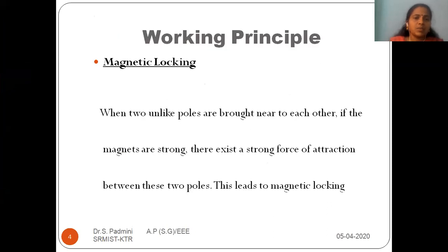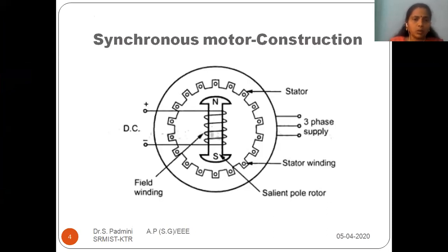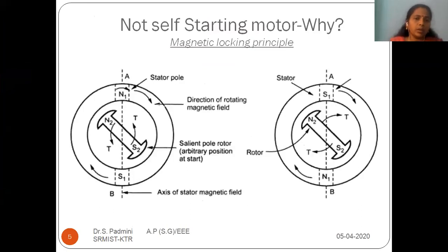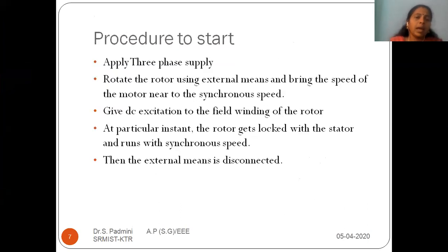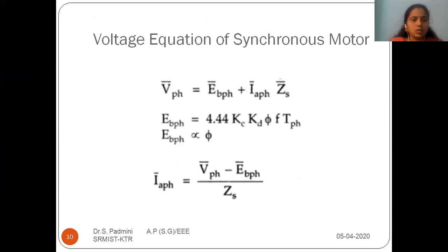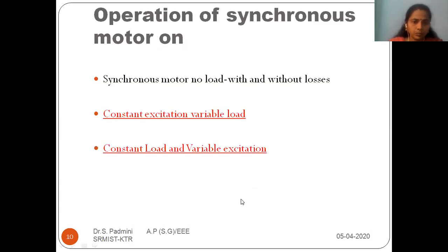In the last class, we started with the construction of the synchronous motor, then moved to the working principle. We saw why the motor is not self-starting and its principle of magnetic locking, the procedure to start the synchronous motor, and the methods by which you can start it. We also covered the use of damper winding and the voltage equation, where the current I-phase is the vector difference V-phase minus E-phase divided by Zs.